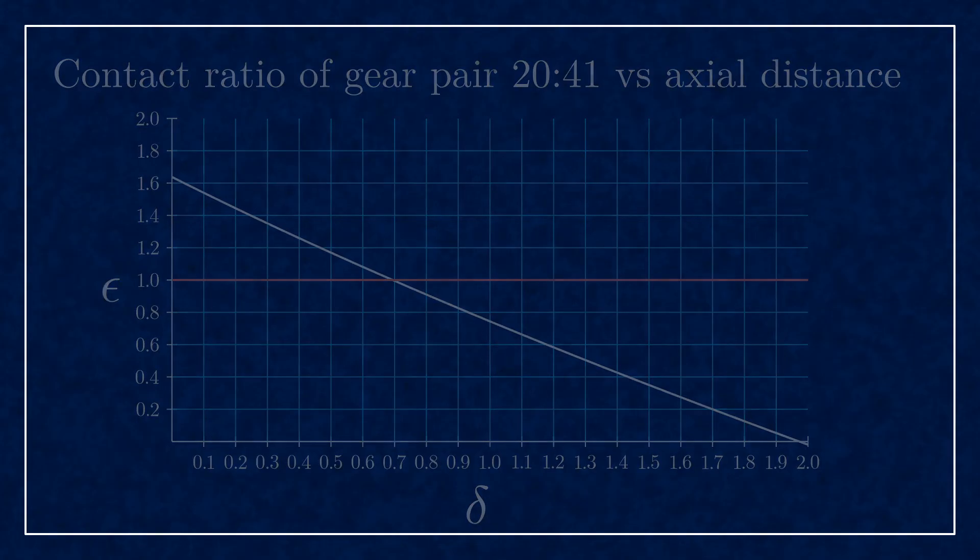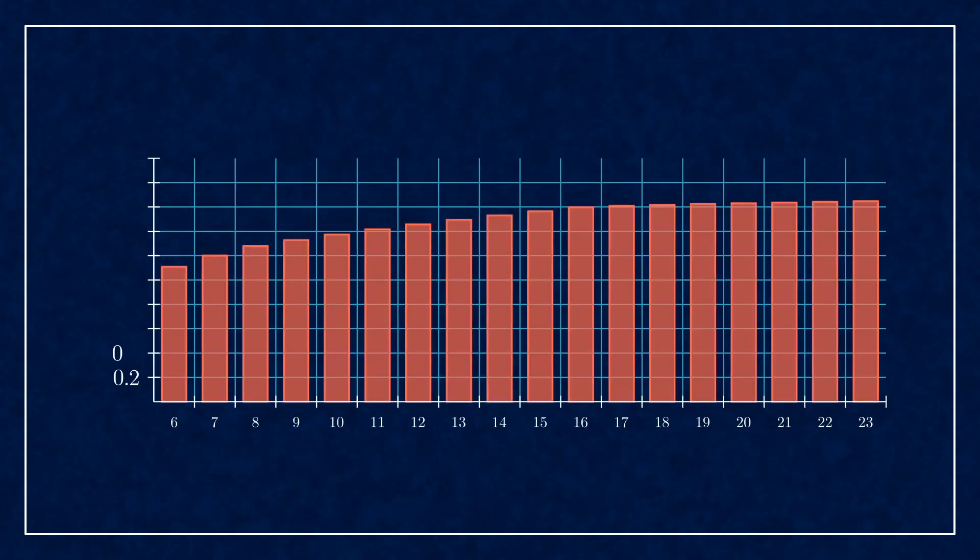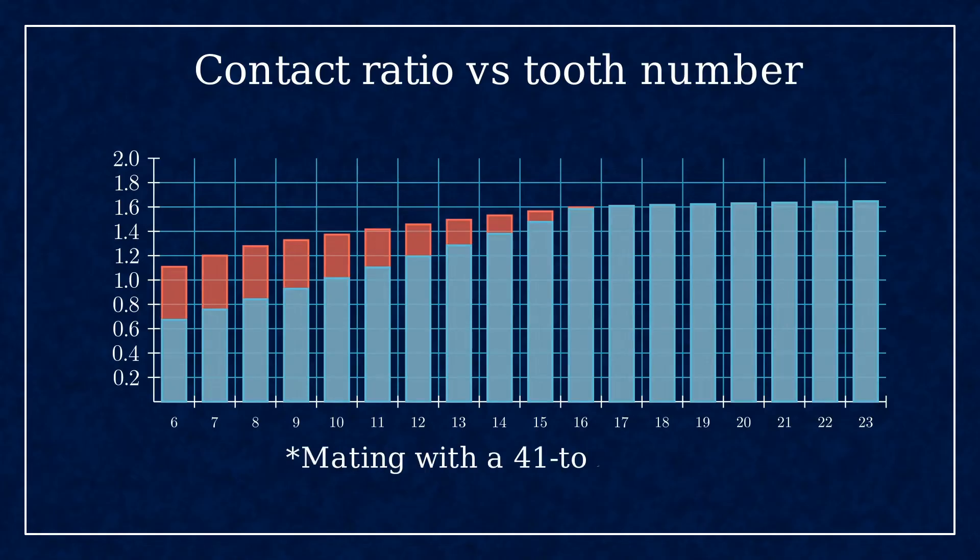And as for undercutting and profile shifting, here's how the contact ratio changes with the number of teeth. In this scenario, different gears are matched with a 41 tooth gear, with and without profile shift at nominal axial distance. Since the formula from earlier does not apply to undercut gears,